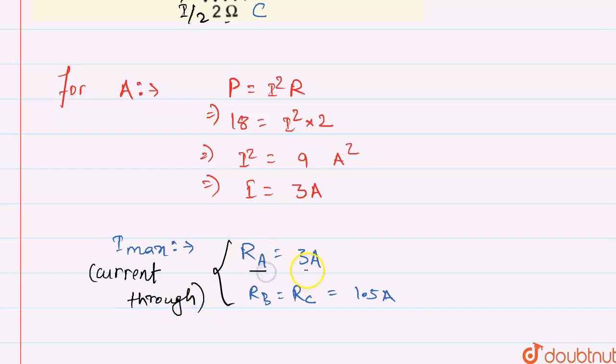Resistor A is 3 ampere, resistors B and C is 1.5 ampere. That's all for this question guys, thank you.